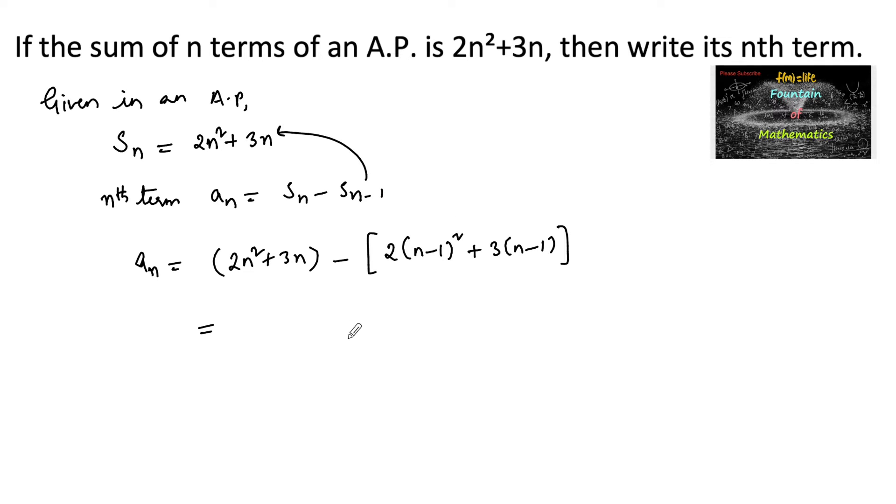In place of n minus 1 we substitute, so we will be getting 2n square plus 3n minus 2 times n minus 1 whole square, that is n square minus 2n plus 1, and plus 3n minus 3. Or we can write 2n square plus 3n minus 2n square minus 4n plus 2 plus 3n minus 3.